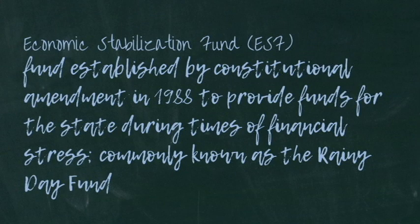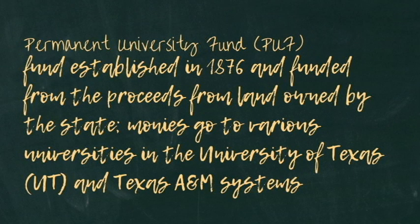Much debate surrounds how to use the growing Rainy Day Fund. In 2014 and 2015, constitutional amendments transferred rainy day funds to water and transportation initiatives. The Permanent University Fund (PUF) was established in 1876 and funded from proceeds of state-owned land; monies go to universities in the UT and Texas A&M systems. All income from surface leases goes into the Available University Fund (AUF) to distribute PUF monies, while income from mineral leases and proceeds from PUF land sales go into the PUF and are invested.